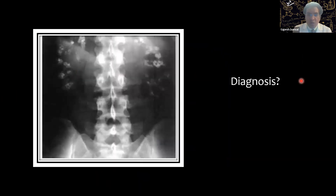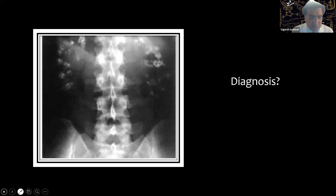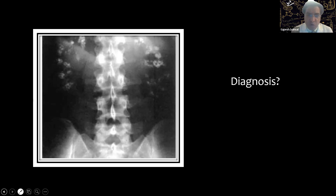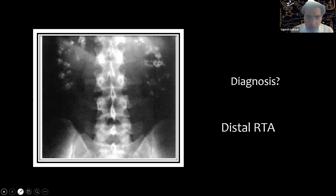This is showing nephrocalcinosis. The diagnosis here is distal renal tubular acidosis. For high anion gap metabolic acidosis (HAGMA), as GFR drops below 30 in AKI and CKD, NAGMA transitions to HAGMA. If you have an unexplained high anion gap metabolic acidosis and the diagnosis is not clear, think of poisonings. MUDPILES is a useful mnemonic and GOLD MARK is a newer mnemonic for HAGMA causes.